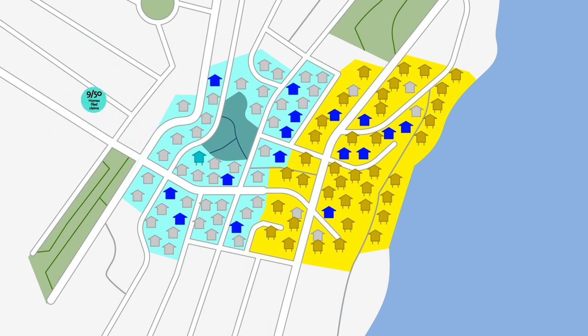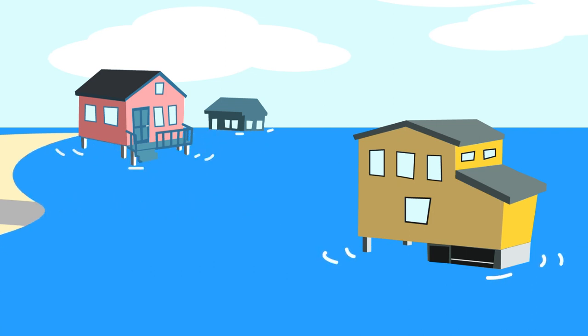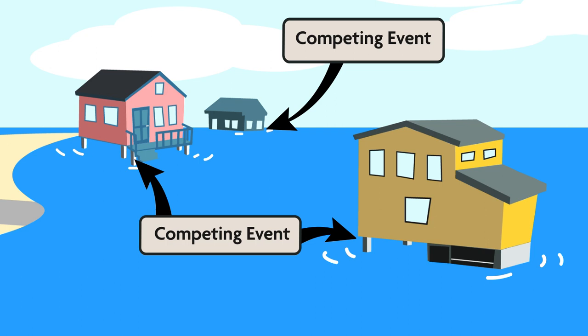In this case, whether people converted their homes to stilts dramatically changed the risk of flooding. No analogy is perfect, but this same issue—that the occurrence of one event can prevent or change the likelihood of the occurrence of another—comes up in research all the time. When events compete with each other to produce the outcome of interest, they're known as competing events. The probability of one of these events occurring among the other potential competing events is known as a competing risk.